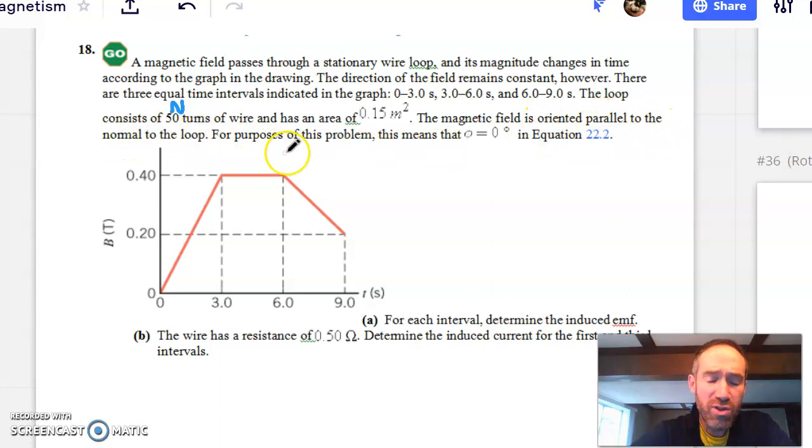And there's the area of the loop. Magnetic field is oriented parallel to the normal of the loop, meaning that the field is pointing in the same direction as the area vector. And so we know that flux is a dot product, but we will not have to worry about the cosine of phi, the cosine of zero. We know it will just be one, and we won't mention that anymore. And so it says, for each interval, determine the induced EMF.